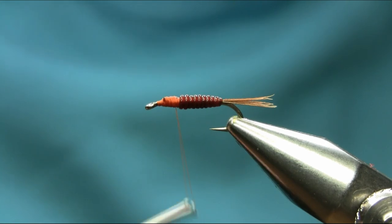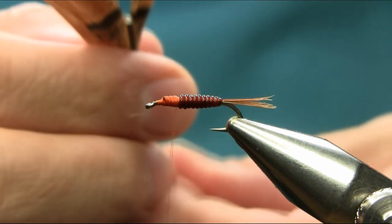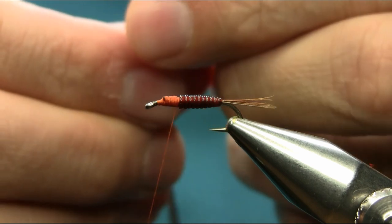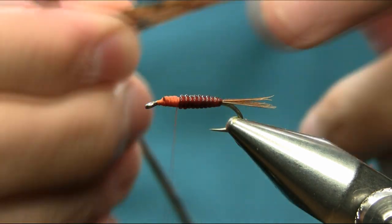I need a nice head here, and same again I'm using pheasant tail for the legs thorax, so I need a decent amount actually.